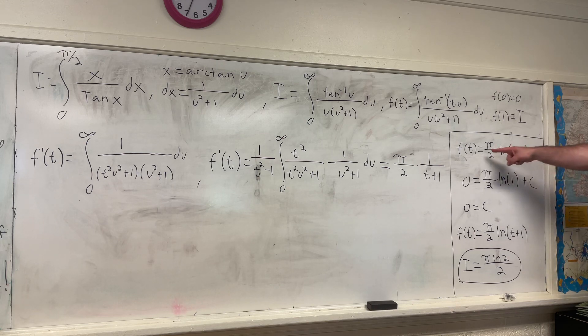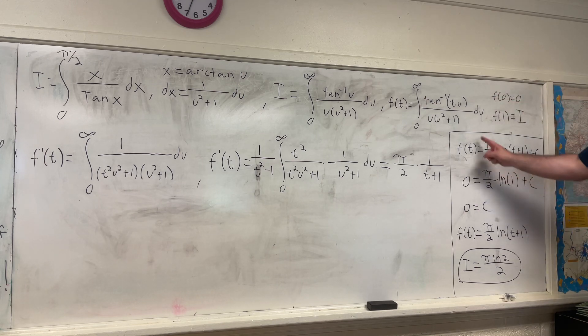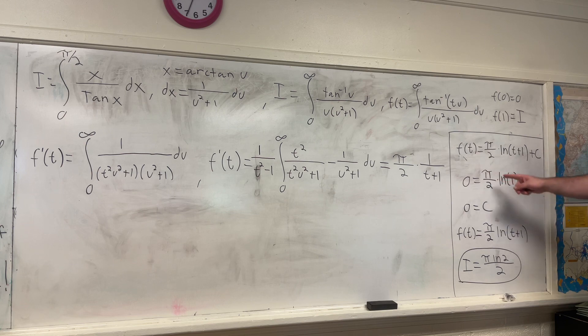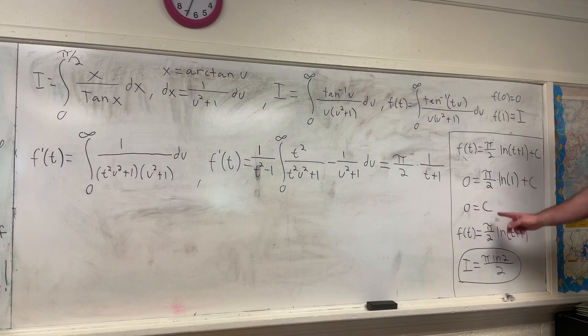So f of t is equal to pi over 2 times the natural log of t plus 1 plus c. We need to get rid of that c, so we'll solve for it using this fact right here that f of 0 is equal to 0. That will give us that 0 is equal to this thing evaluated at 0. Pi over 2 times the natural log of 0 plus 1, which is natural log 1 plus c. Of course, natural log 1 is 0. So we get that 0 is equal to c.